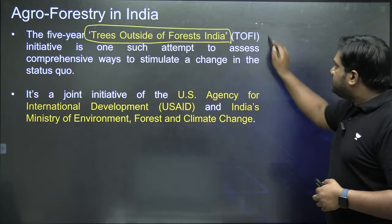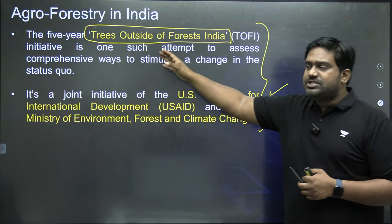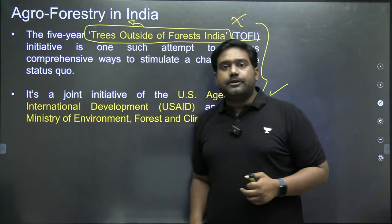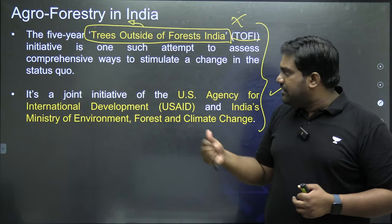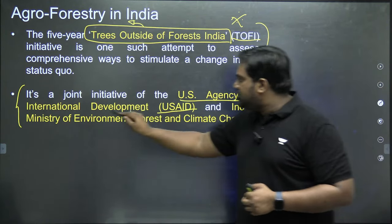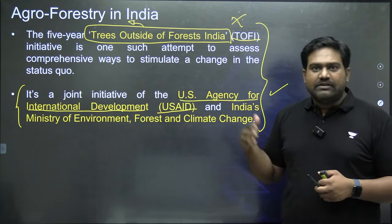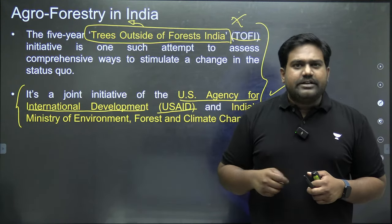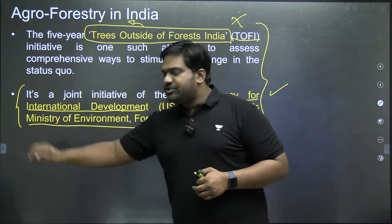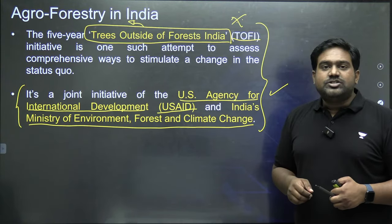There is a joint initiative called Trees Outside of Forest India — an agroforestry initiative taken up by India's Ministry of Environment, Forest and Climate Change in association with USAID, the U.S. Agency for International Development. USAID is a developmental agency that provides funds and assistance to developing and poor countries. This is a joint initiative between India and the U.S. that is important to note for your prelims.